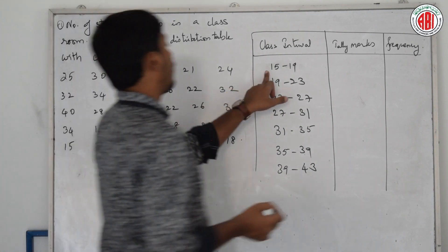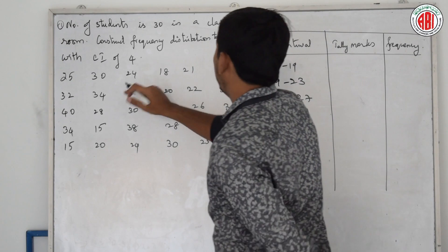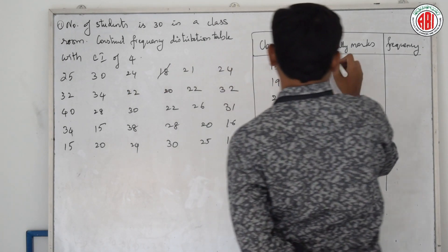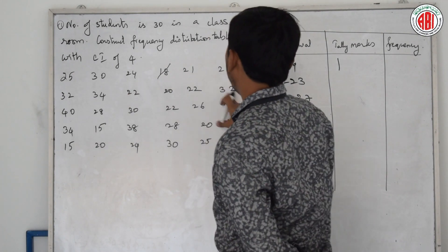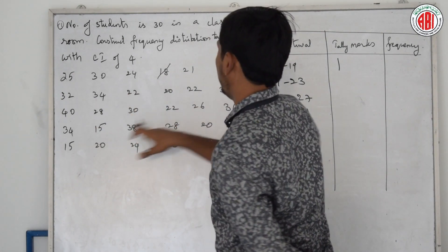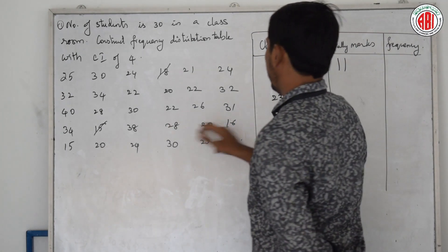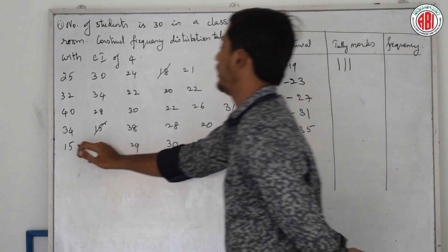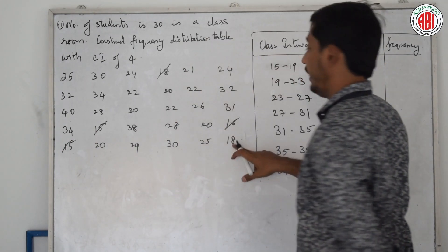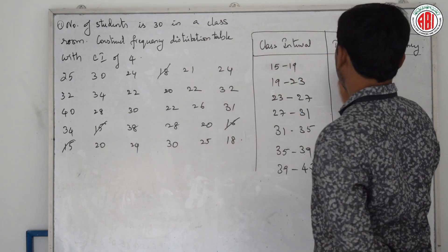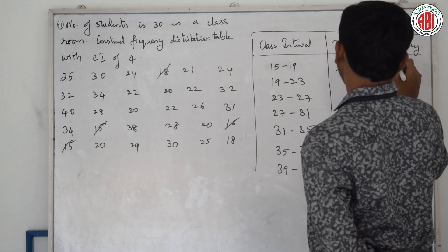Now check how many numbers are there between 15 and 19. Count through the data: we find 1, 2, 3, 4, and 18 makes the fifth number. So the frequency for the class interval 15 to 19 is 5.